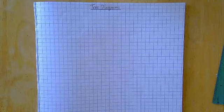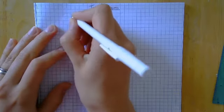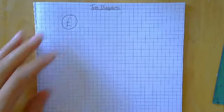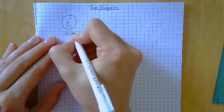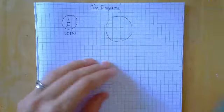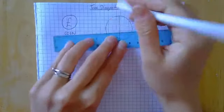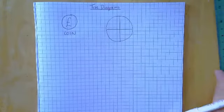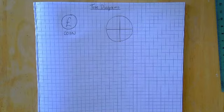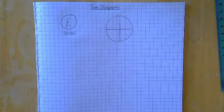So let's start — we need a scenario. Let's pretend we've got a normal coin; I'll just put a pound sign on it. I'm also going to have a spinner — you might want to get a circle to draw around — and I'm going to split my spinner into four equal sections.